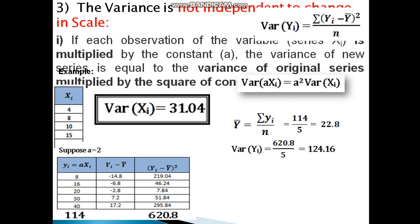Variance equals 622.8 divided by 5, which equals 124.16. This result equals the square of the constant a (which is 2 squared equals 4) multiplied by the original variance 31.04, confirming that variance of (a times xi) equals a-squared times variance of xi.